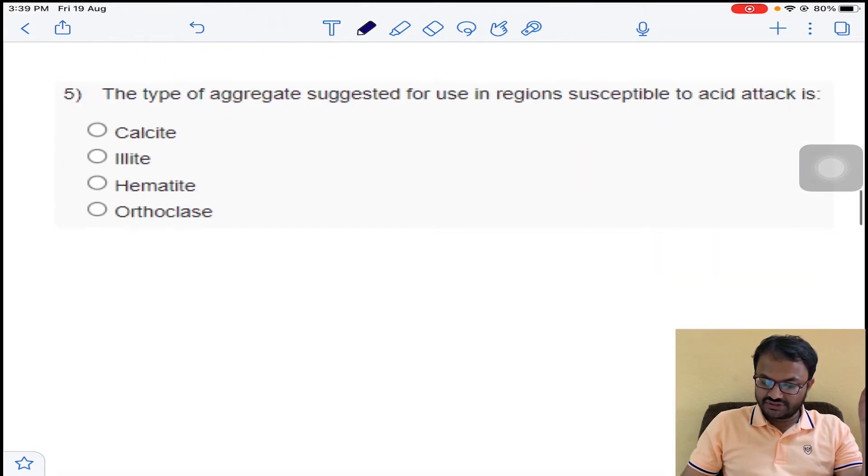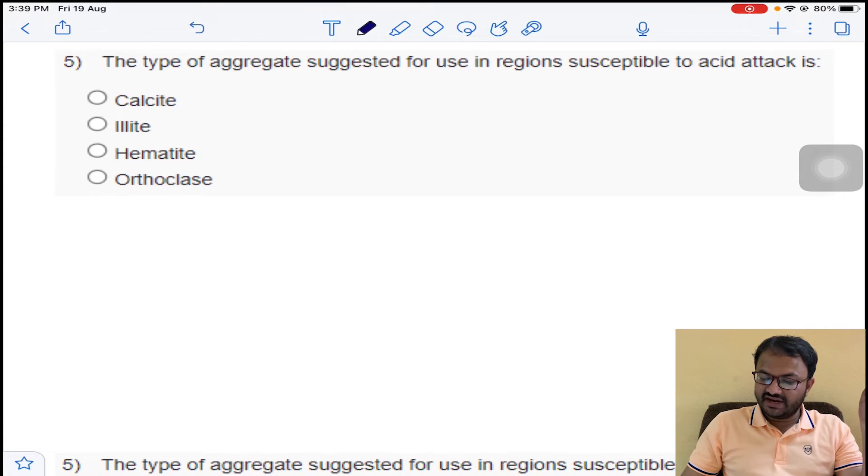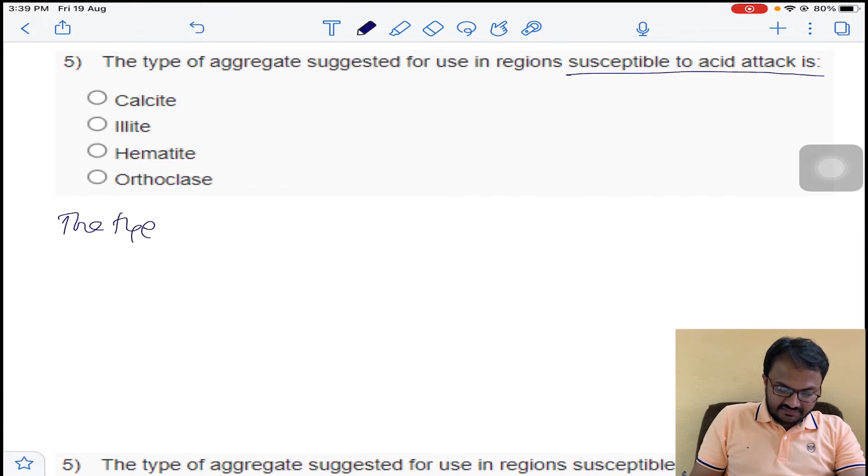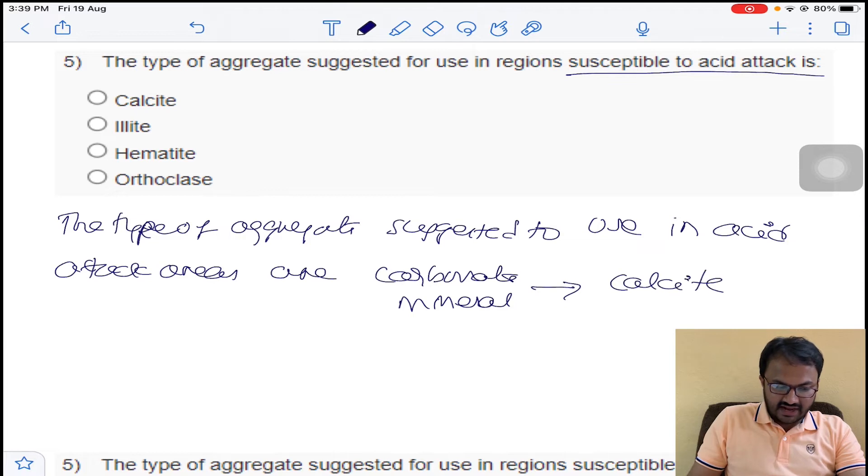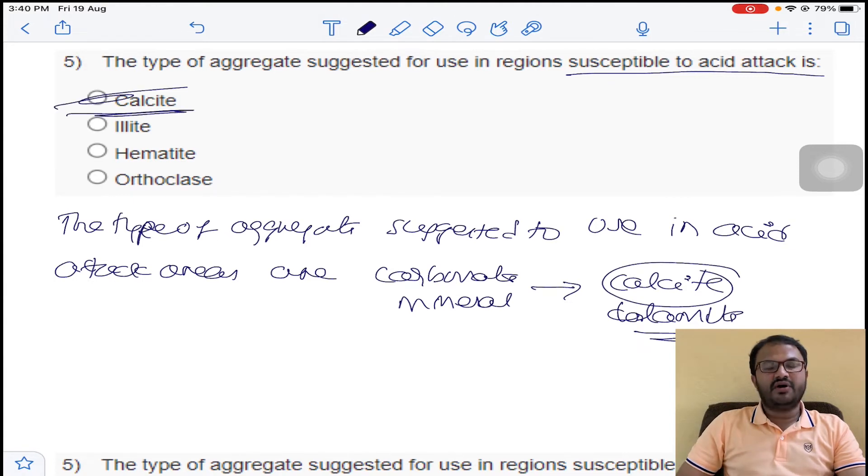Next question: the type of aggregate suggested for use in regions susceptible to acid attack. When the regions are susceptible to acid attack, which type of aggregates we will prefer? The type of aggregate carbonate minerals suggested to use in acid attack areas are generally carbonate minerals. These carbonate minerals are calcite and dolomite.